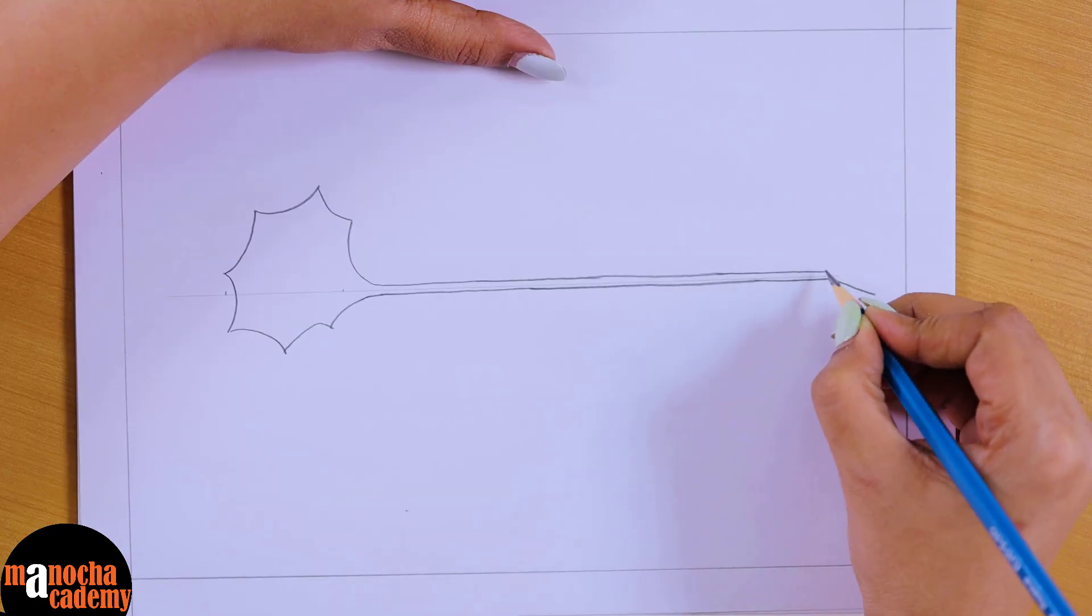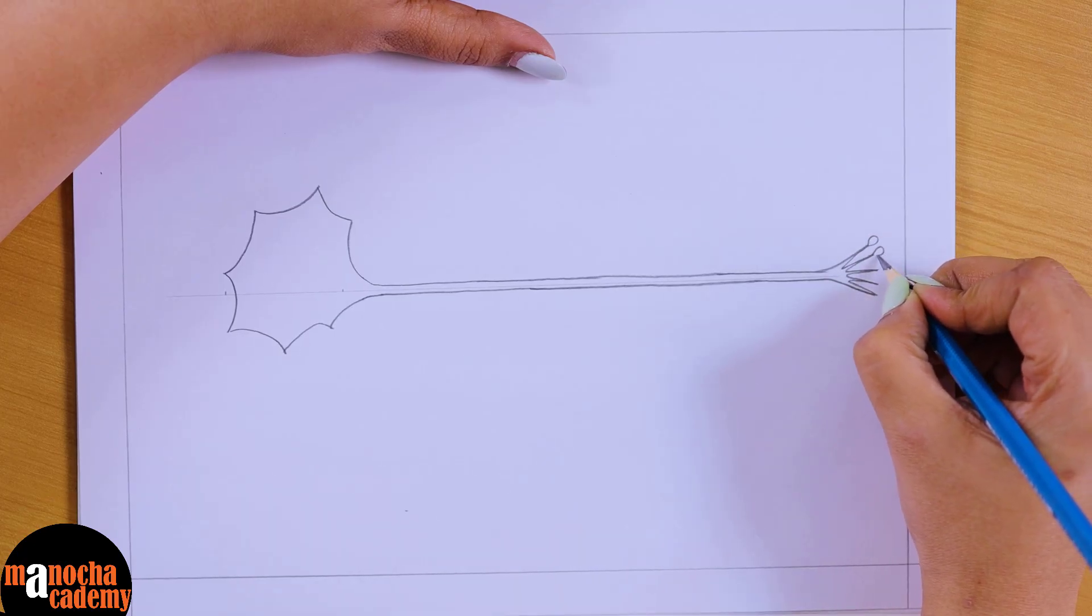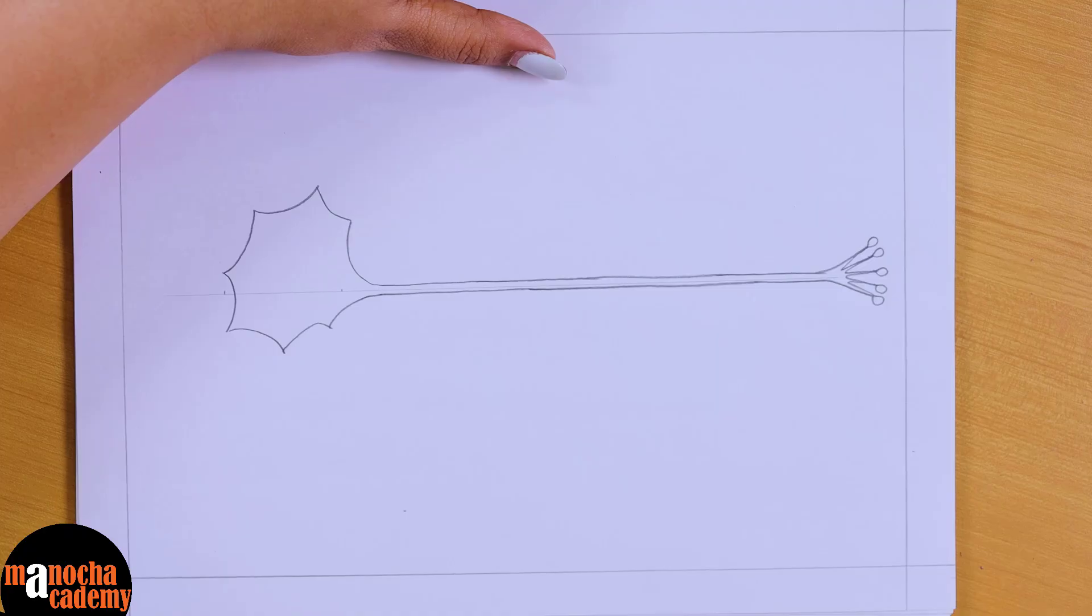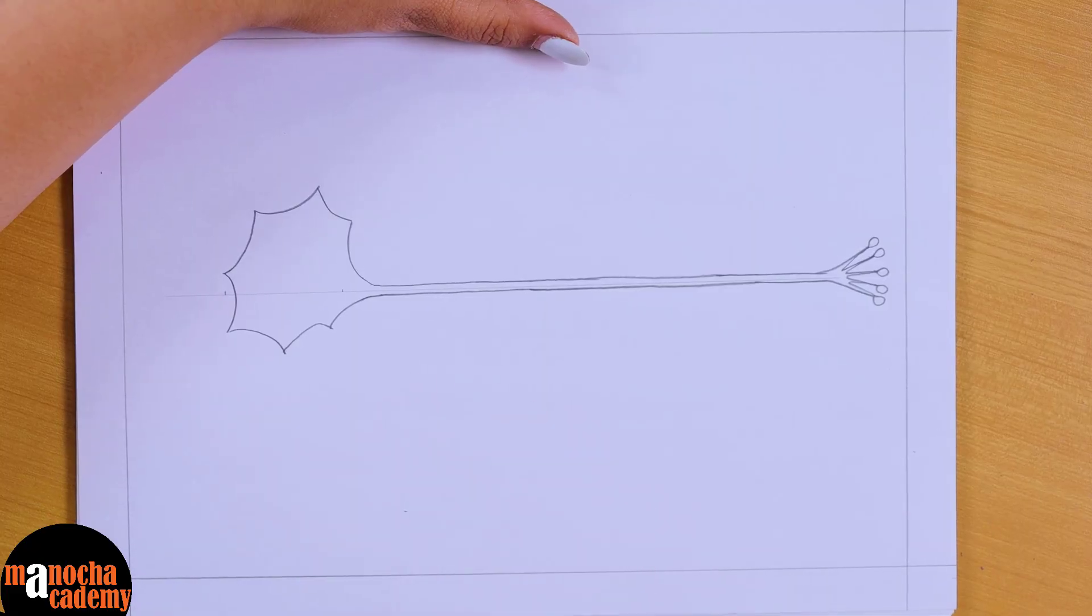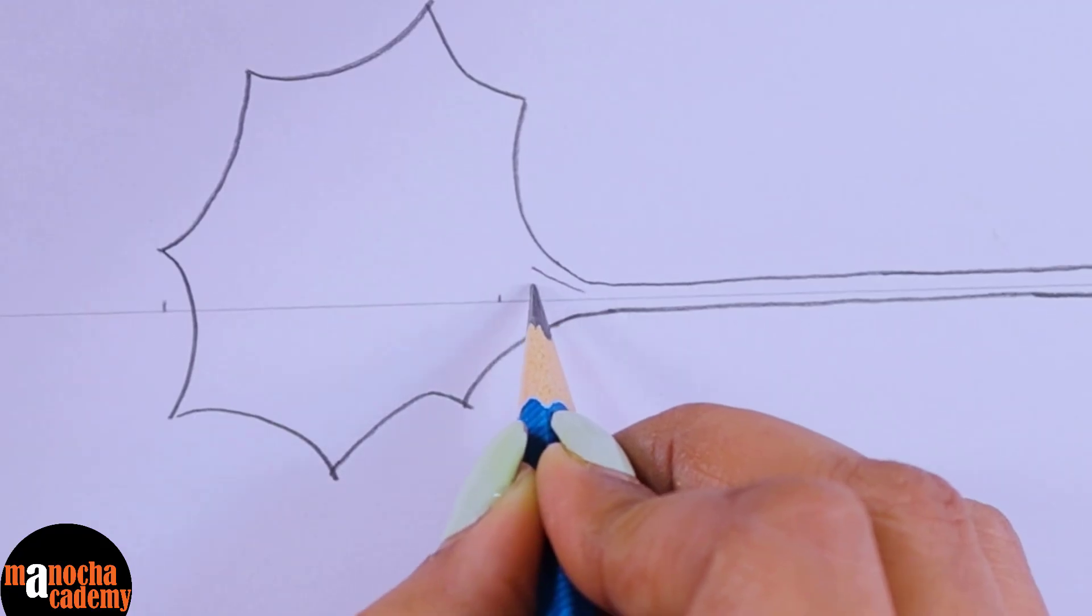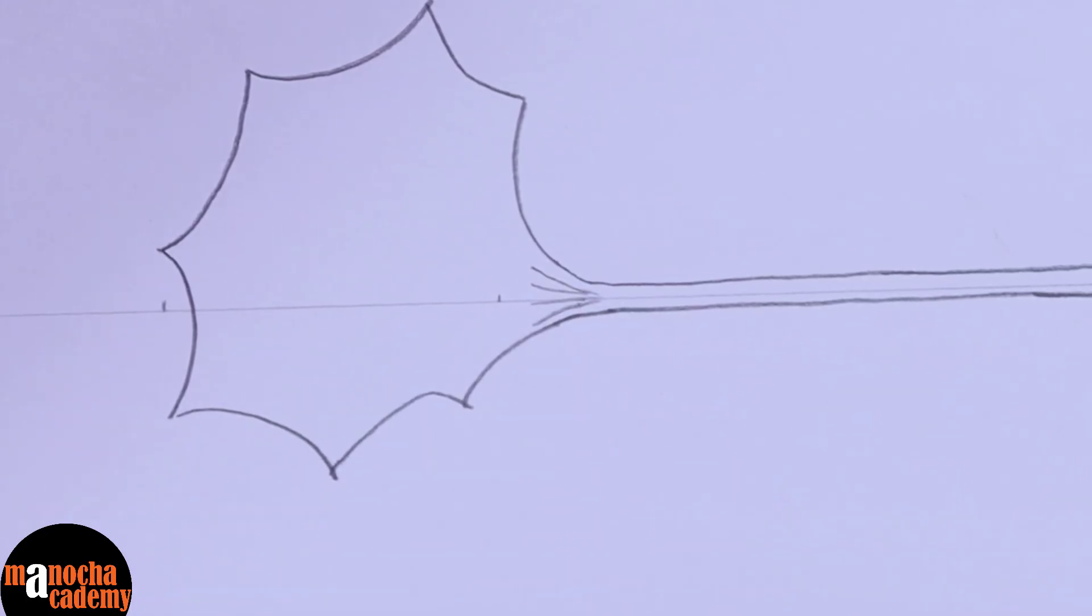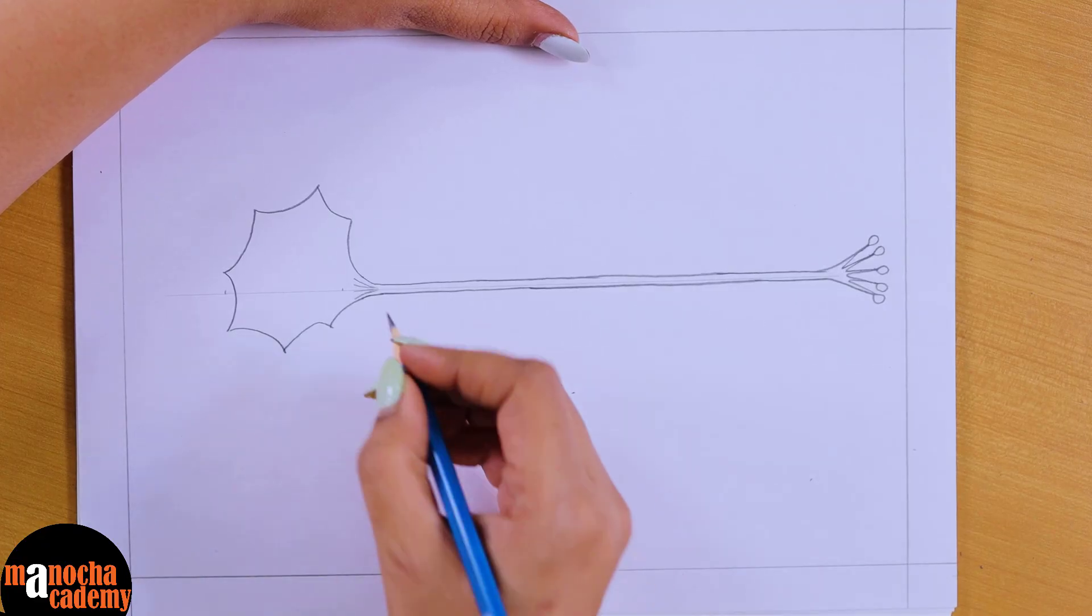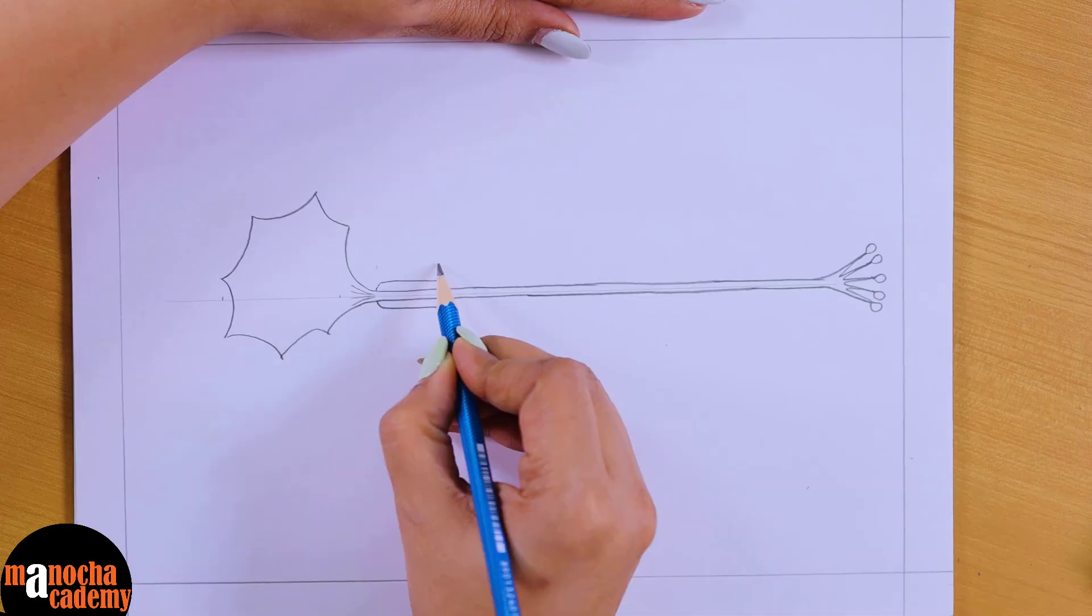And then it branches at the end. At the end we will draw knobs. If you remember, there are synaptic knobs at the end of the axon, so we'll draw knob-like structures. And now we'll draw the other coverings of the axon. So on the axon the first covering that is present is the myelin sheath. Now the axon originates from this part which is known as the axon hillock. We will just give a few lines like this to show this axon hillock.